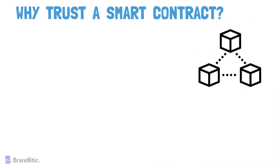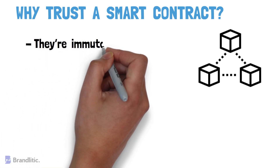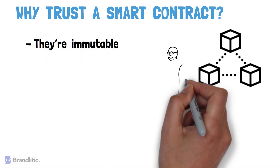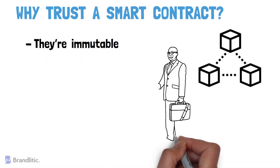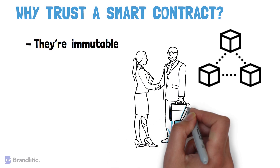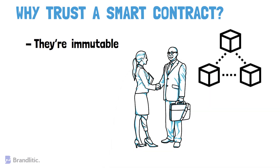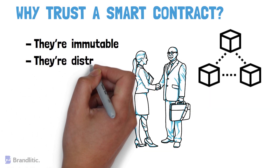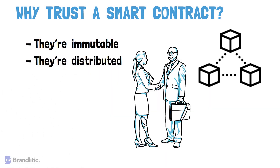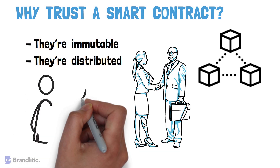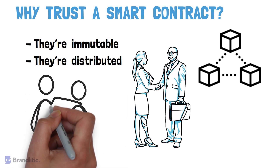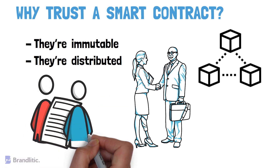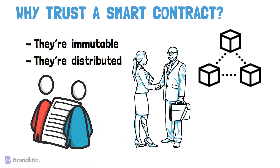The most prominent blockchain properties include: first, they're immutable, which means a smart contract can never be changed and no one can tamper with or break the contract. Second, they're distributed, which means the outcome of the contract is validated by everyone in the network, just like any other transaction on the blockchain.